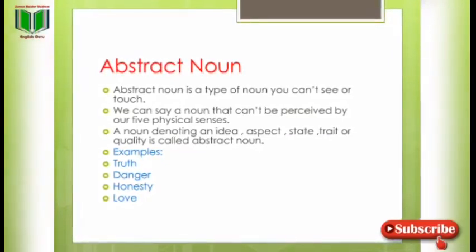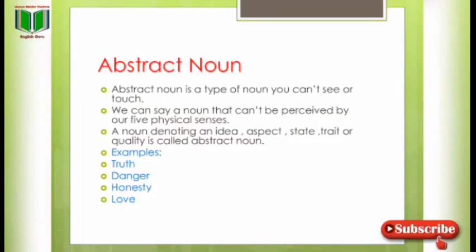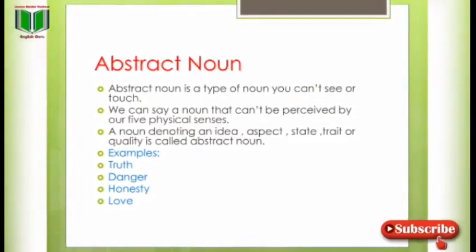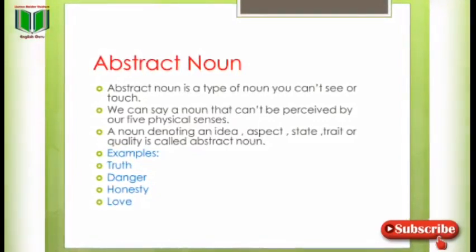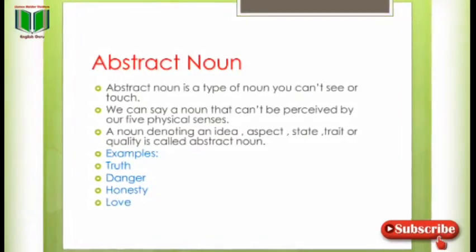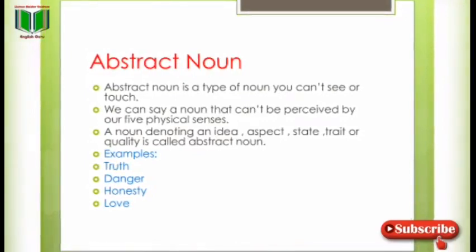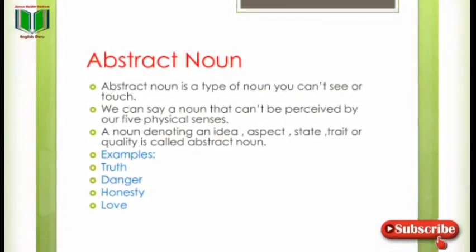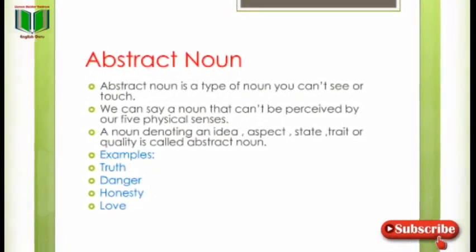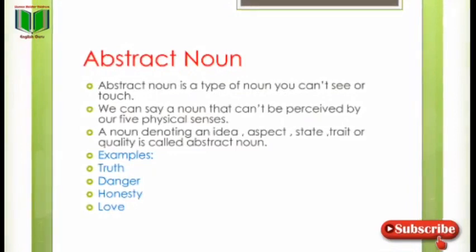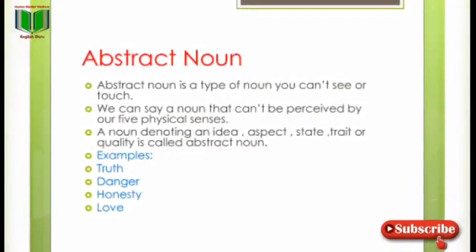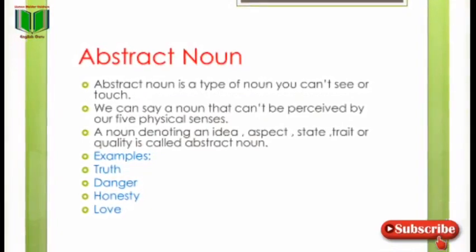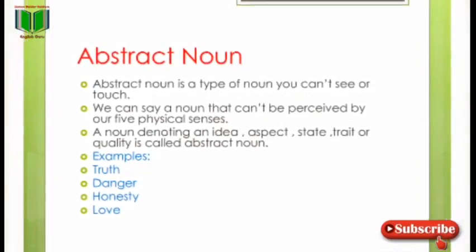Abstract noun is a type of noun you can't see or touch۔ Abstract noun وہ noun ہوتا ہے جسے آپ نہ دیکھ سکتے ہیں نہ چھو سکتے ہیں۔ A noun can't be perceived by our five physical senses. A noun denoting an idea, aspect, state, trait or quality is called an abstract noun. Examples: truth, danger, honesty, love.